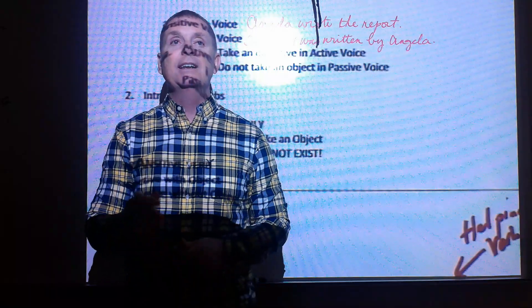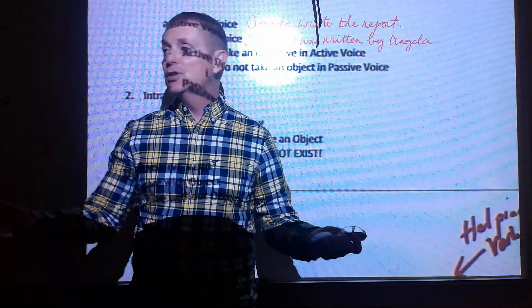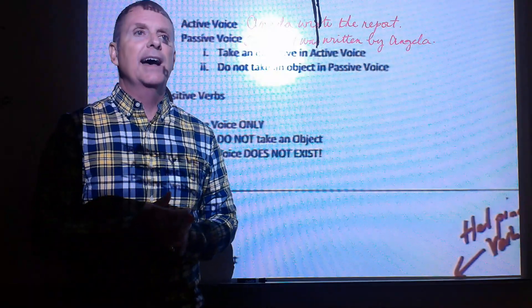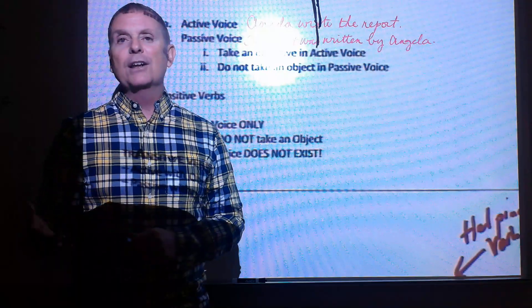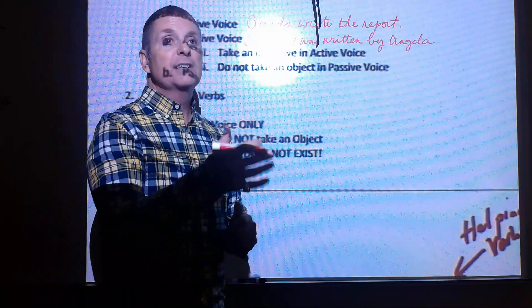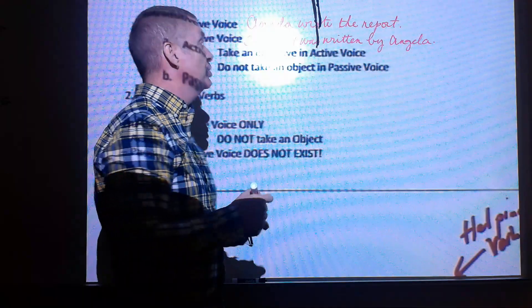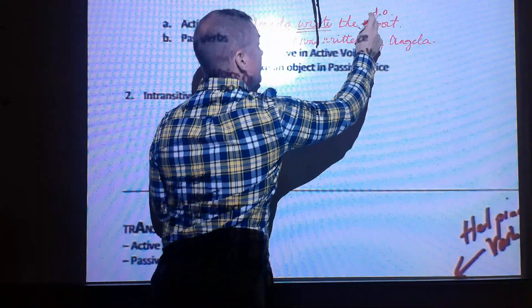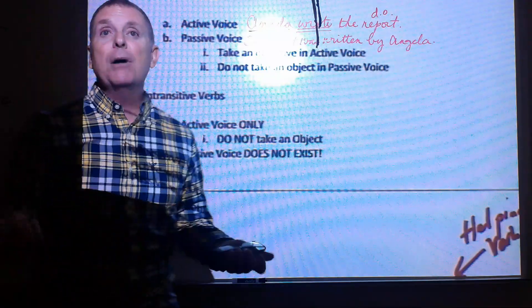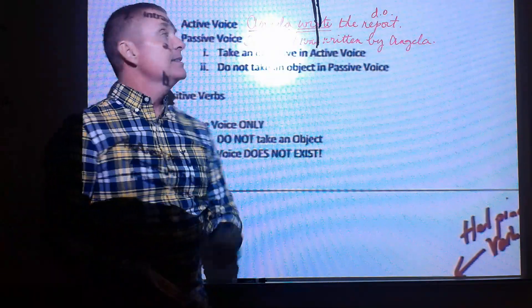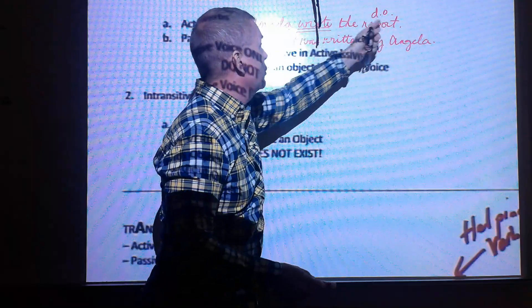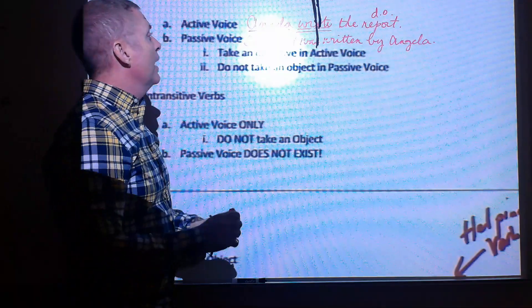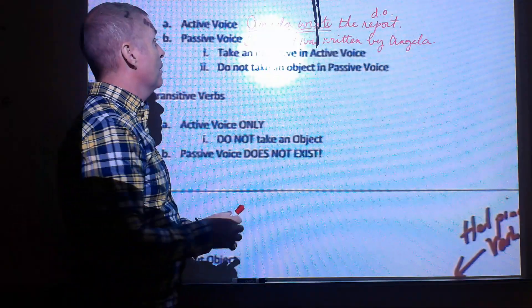In business writing, use active voice for good or neutral news — it is direct, specific, and gets to the point quickly. Use passive voice when the message might be negative or condescending, to show respect to the person being discussed. In active voice, Angela (subject) wrote (verb) the report (direct object). In passive voice, the report is the subject — it cannot write itself, so the subject is being acted upon.